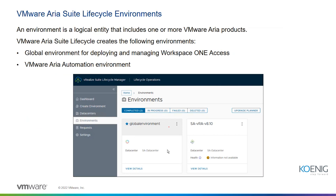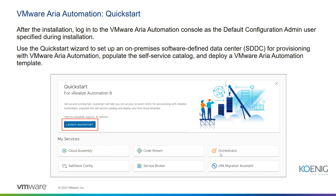An Environment is a logical entity used to enable ARIA Automation products. Different environments can be created — a Global Environment and an ARIA Automation Environment. The Global Environment is for deploying and managing Workspace ONE Access. From there, you can access all services in the console: the key components appear by their names — Cloud Assembly (Assembler), Consumption, Pipelines (Code Stream), Orchestration, and SaltStack Config. These are the actual names used in the vRealize console and now in the ARIA Automation console.